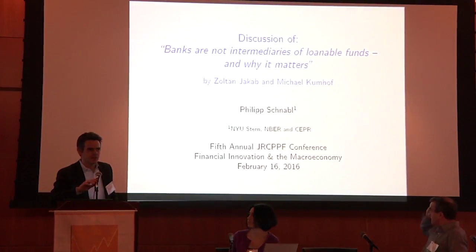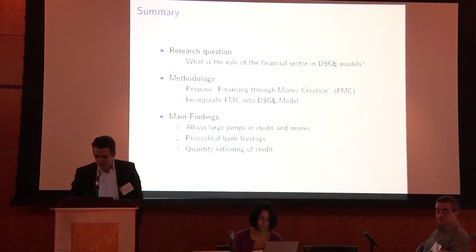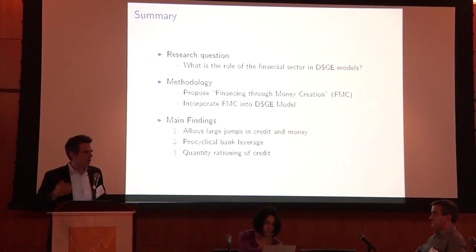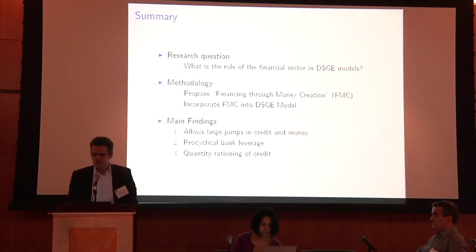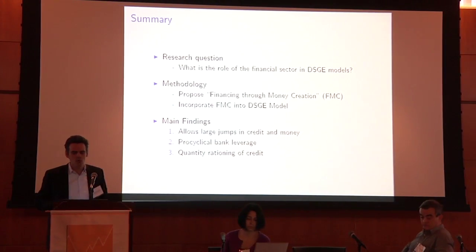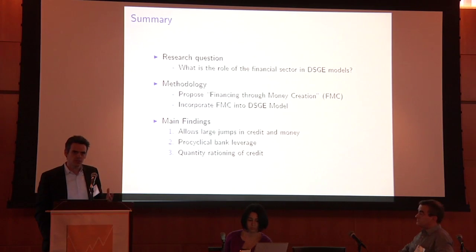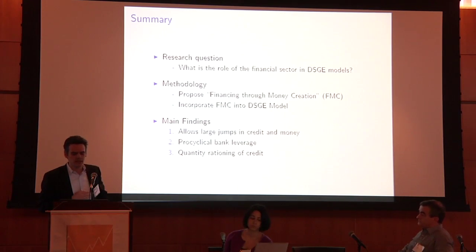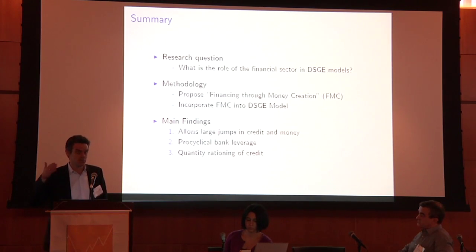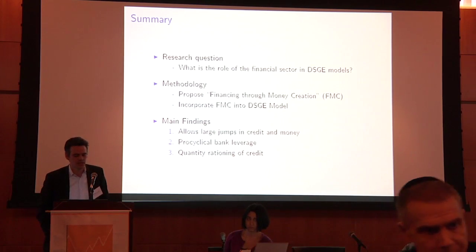Thanks a lot for having me here. It's a pleasure to discuss this paper. Let me start by summarizing it. The big question being asked is: what's the role of the financial sector, what's the role of money creation in DSGE models? The paper proposes the idea of FMC banks — Financing through Money Creation — explains that concept, provides real-world examples of why that's the relevant way to think about banks, and then puts that idea into a standard DSGE model to see what we can learn from it and what moments we can match that we typically cannot in standard models.